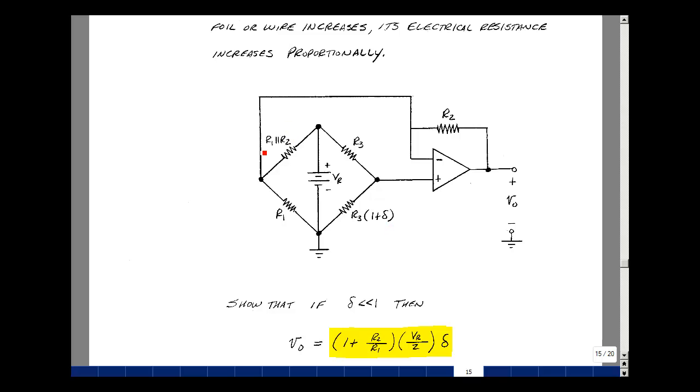If you pick this resistor to be equal to the parallel combination of R1 and R2, then the output voltage has a very nice, simple formula. It's 1 plus R2 over R1 times the reference voltage here, divided by 2, times this change in resistance. So we now have a proportionality with the change in resistance, and we can pick this to be a large enough number so that we can detect the voltage.